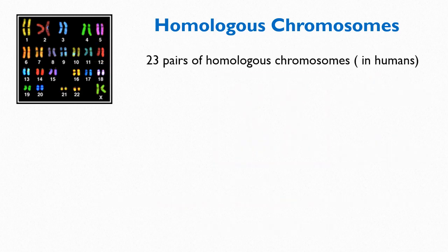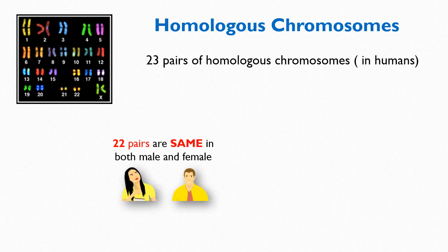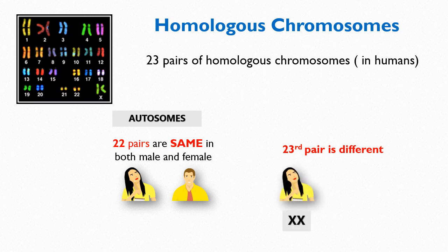There are 23 pairs of homologous chromosomes in humans. Among these, 22 pairs are the same in both male and female — these 22 pairs of homologous chromosomes are known as autosomes. The 23rd pair is different in human male and female. As you can see in the image, the two chromosomes of this 23rd pair are designated by the letter X. Human females have two X chromosomes, so this karyotype represents a human female. Human males have one X and one Y chromosome, and only small parts of X and Y are homologous. Because they determine an individual's sex, the X and Y chromosomes are called sex chromosomes.